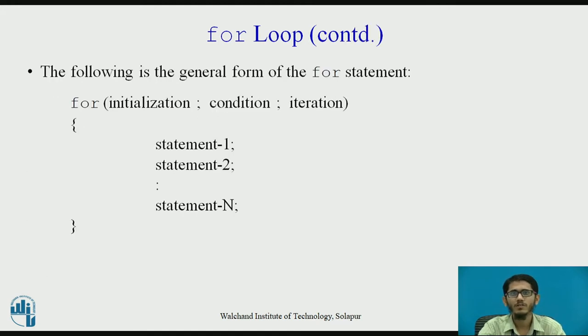Next we have the general form of the for statement. Inside the for loop we have three sections: the initialization section terminated by a semicolon, then the condition section, then the semicolon, then the iteration part, followed by curly braces within which the block of statements is written. The initialization part occurs once.